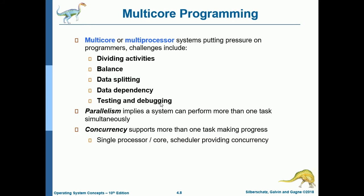For multi-core programming, multi-core or multi-processor systems put pressure on programmers. Challenges include dividing activities, balance, data splitting, data dependency, and testing and debugging. Parallelism implies a system can perform more than one task simultaneously, while concurrency supports more than one task making progress. For a single-processor or single-core architecture, the scheduler is the one that provides concurrency.